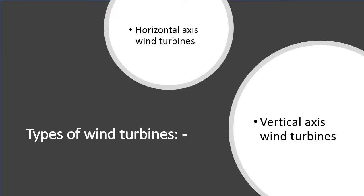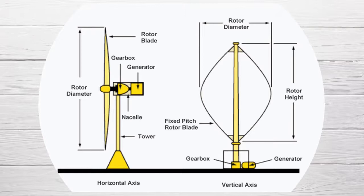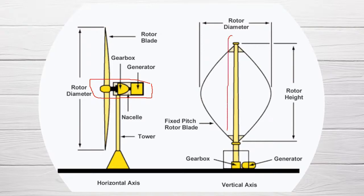In the previous slide we saw the working of a wind turbine. In this slide we are going to see types of wind turbines. There are two types: the first is a horizontal axis wind turbine and the second is a vertical axis wind turbine. We can clearly see that the axis of rotation in the first type is in a horizontal position, and the axis of rotation in the second type is in a vertical position.